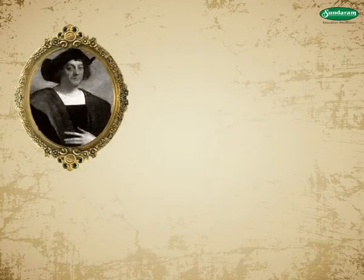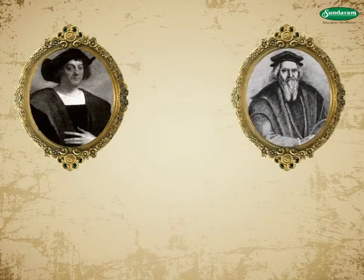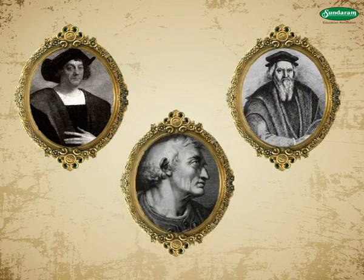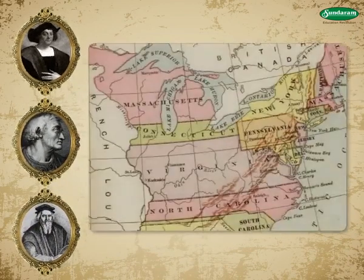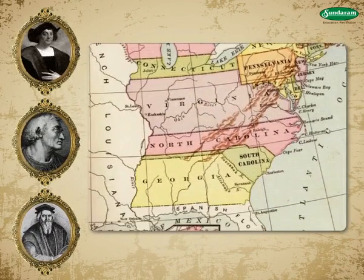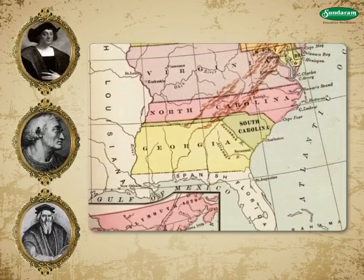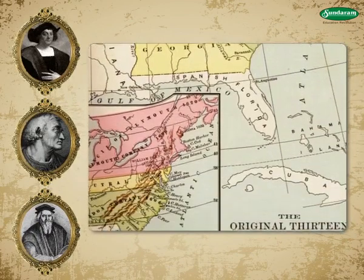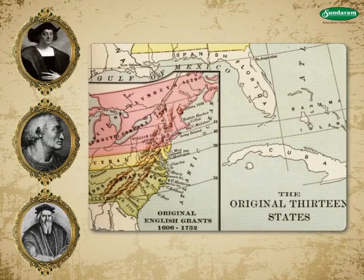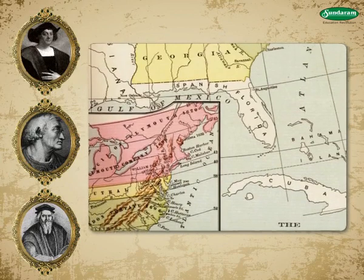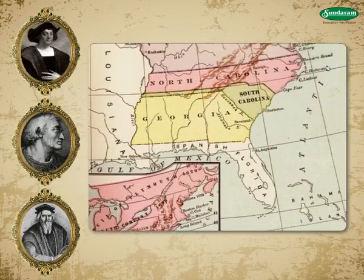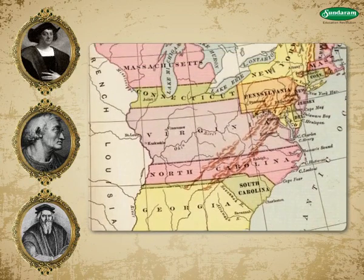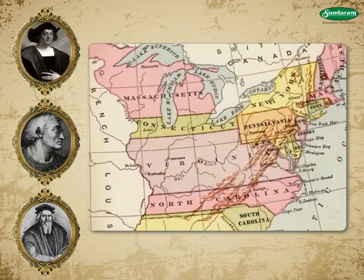Christopher Columbus, John Cabot, and Amerigo Vespucci discovered the northern, eastern, and central parts of the American continent. Between 1606 and 1732, England set up 13 English colonies in North America.